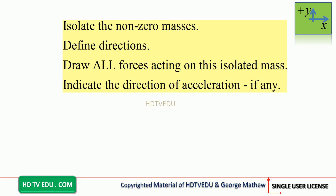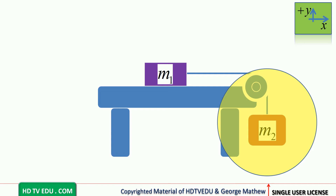To draw the free body diagram: isolate the non-zero masses, define directions — positive x, negative x, positive y, negative y — draw all forces acting on the isolated mass, and indicate the direction of acceleration if any. We are told mass m1 is accelerating to the right, so there is definitely a net force on m1 directed to the right.